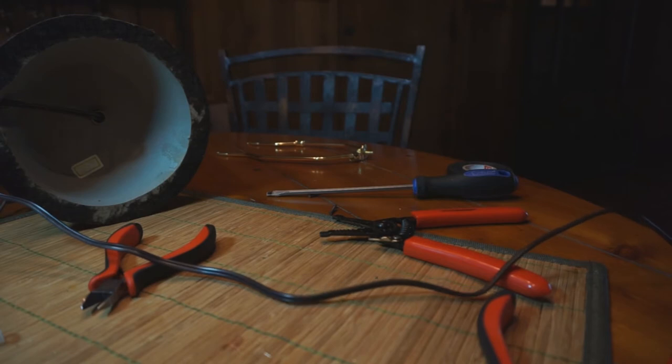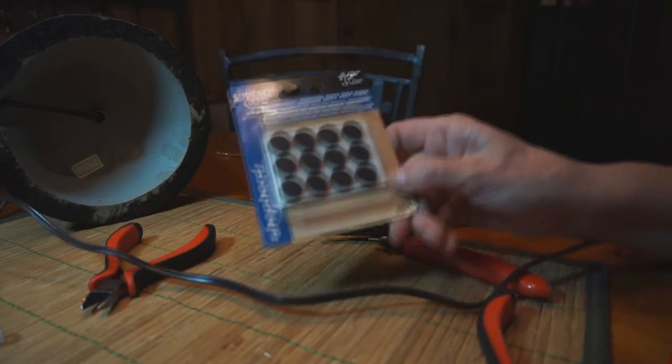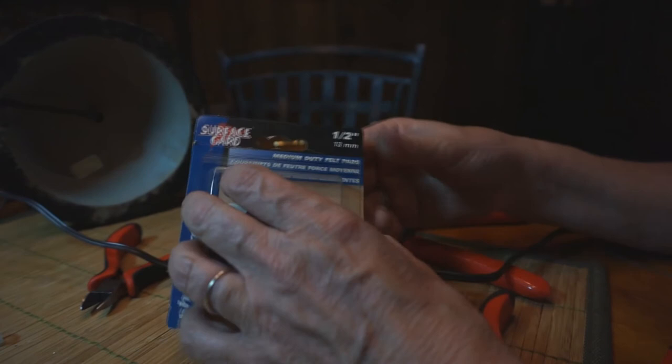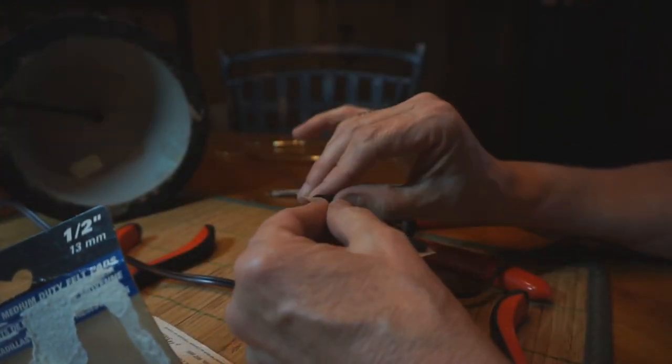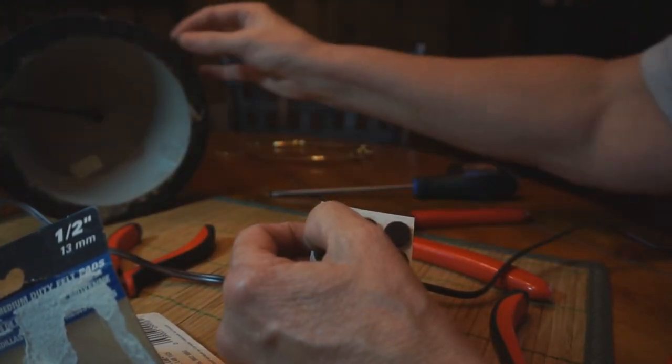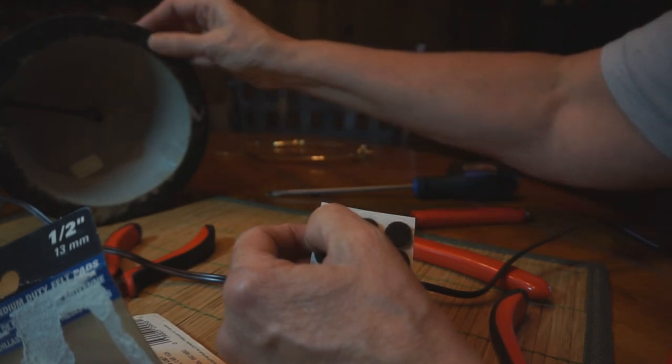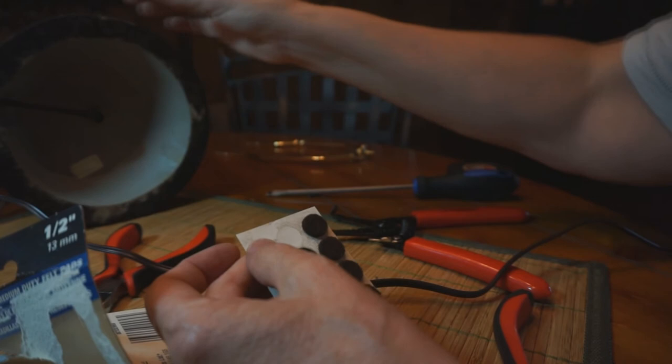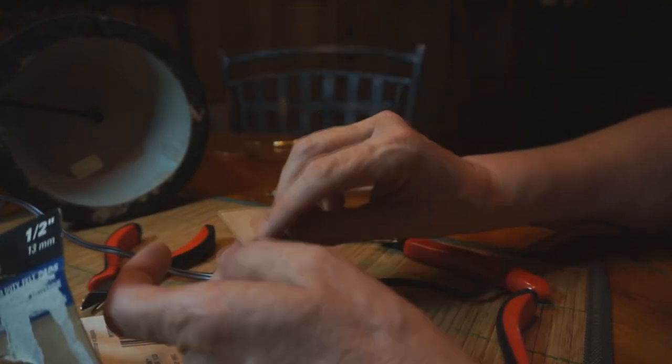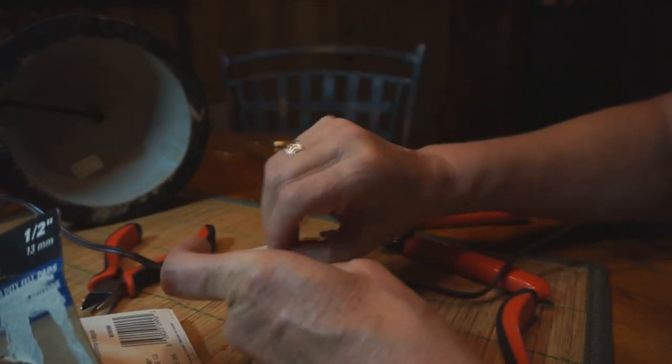Of course I do. Here's some of these little felt stickers. Probably bought them for something and never used them, but I'm going to put these on here because my end table is glass, so it'll probably scratch the glass. So I'm just going to put a few all the way around and we'll call that a done project.